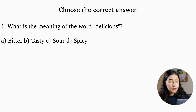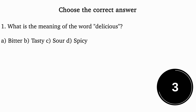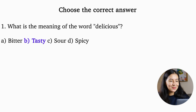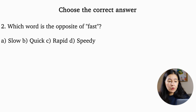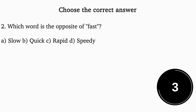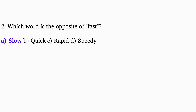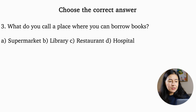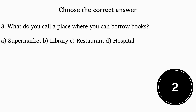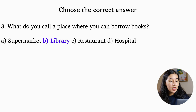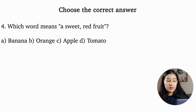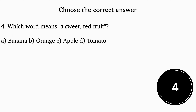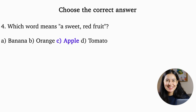Now let's continue with the vocabulary part. Question one: What is the meaning of the word 'delicious'? Bitter, tasty, sour, spicy. The answer is tasty. Which word is the opposite of 'fast'? Slow, quick, rapid, speedy. What do you call a place where you can borrow books? Supermarket, library, restaurant, hospital. Which word means a sweet red fruit? Banana, orange, apple, tomato. The answer is apple.